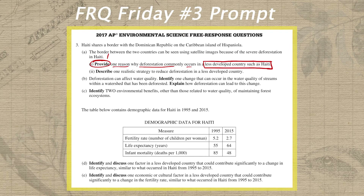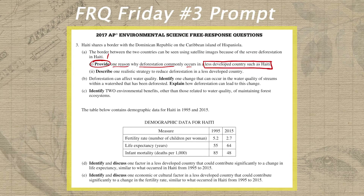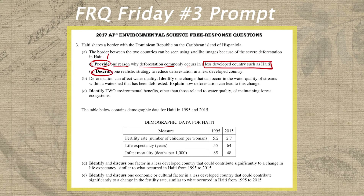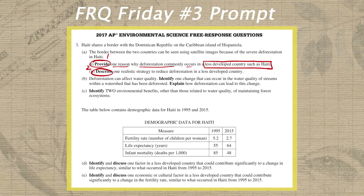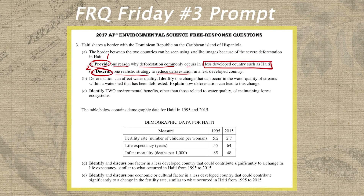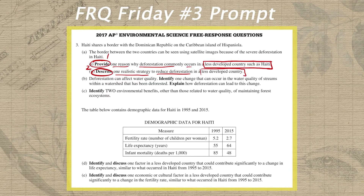Our target is a reason that deforestation commonly occurs — but specifically in a less developed country such as Haiti. We draw a box around this modifier to make sure our reason is specific to a less developed country. In part two of letter A, we circle 'describe' and write a two above it, so we remember we need two layers of detail about a realistic strategy to reduce deforestation, again specifically in a less developed country such as Haiti.